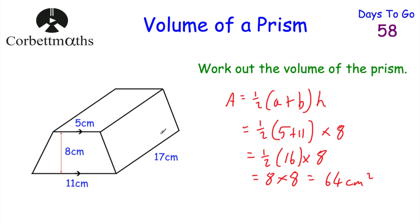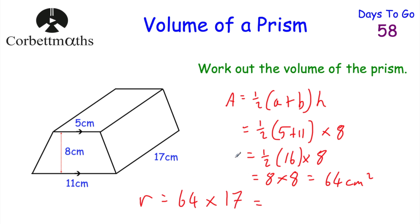We just need to multiply by how long the prism is. The prism has a length of 17 centimetres, so to get the volume we do 64 multiplied by 17, which equals 1088 centimetres cubed. That's the volume of that prism — well done if you got that.